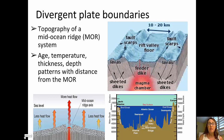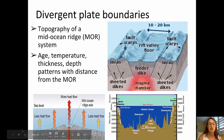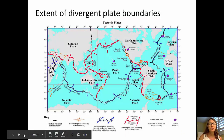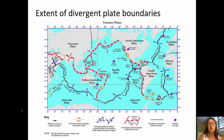Divergent plate boundaries can form either on an ocean floor or on a continental location, like what's happening in Africa, where the continent of Africa is actually rifting apart. So we have a brand new divergent plate boundary there, and if that continues to happen, it may even separate enough so that we have a new ocean formed.